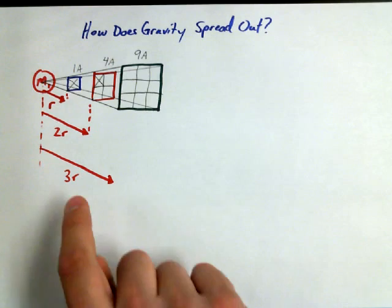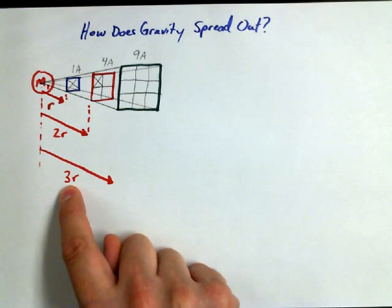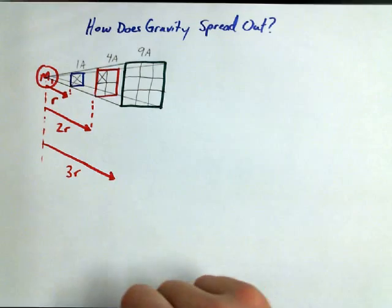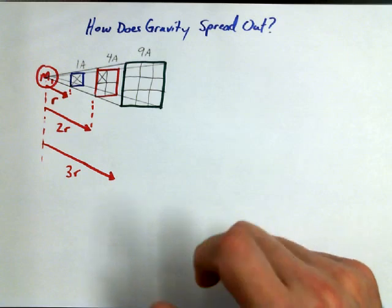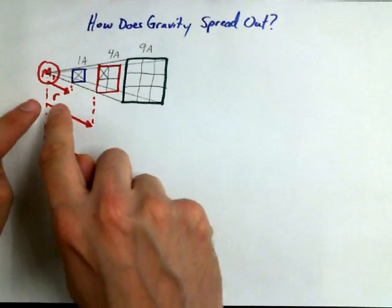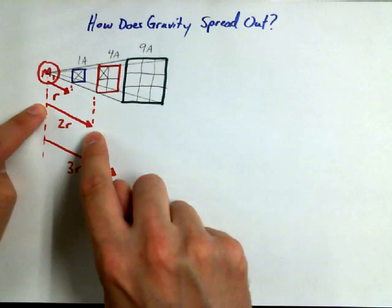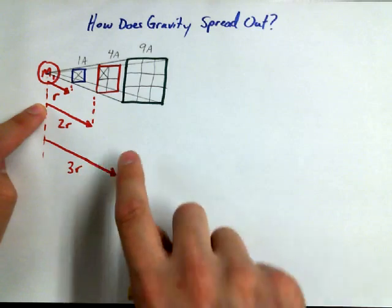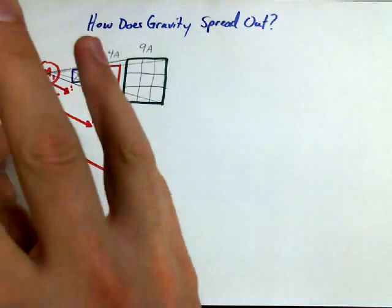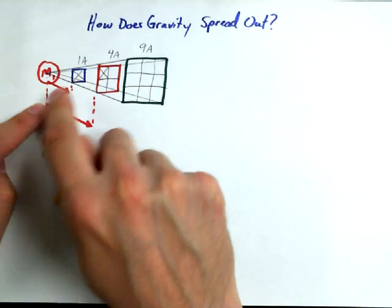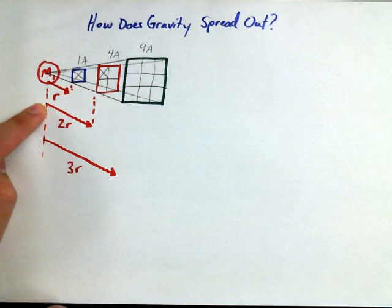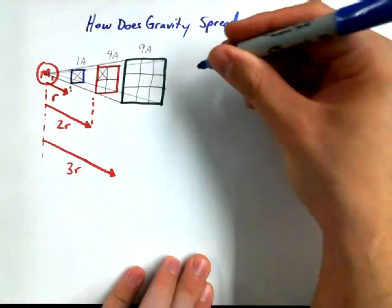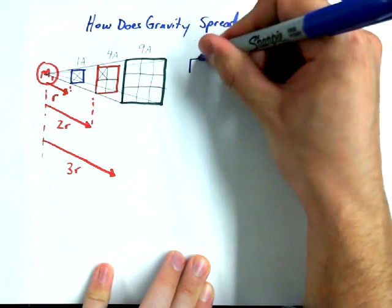It turns out that this has nine units of area, this has four units of area, and this has one unit of area that the gravity gets spread out over. Here's what I want you to notice. What's three squared? What's two squared? What's one squared? It's a connection, right? We call it an inverse square law.